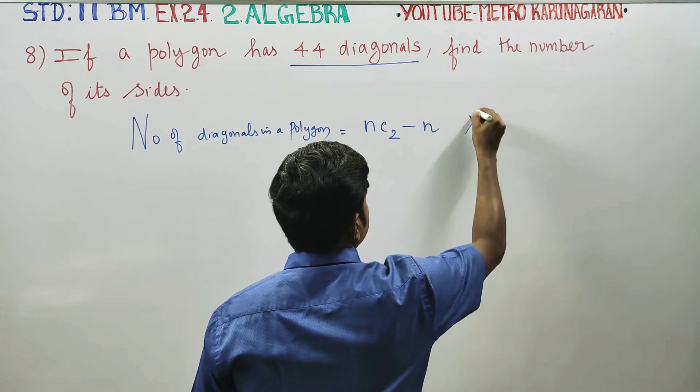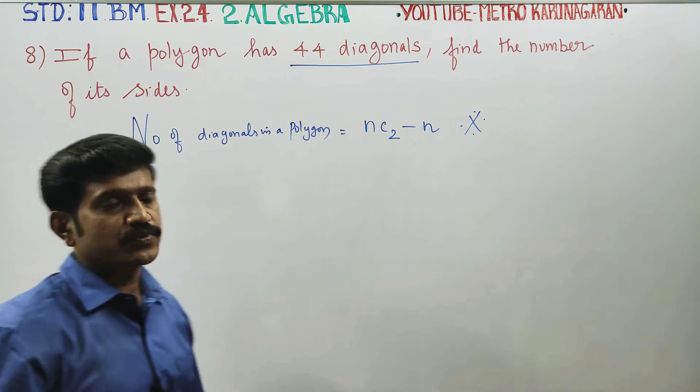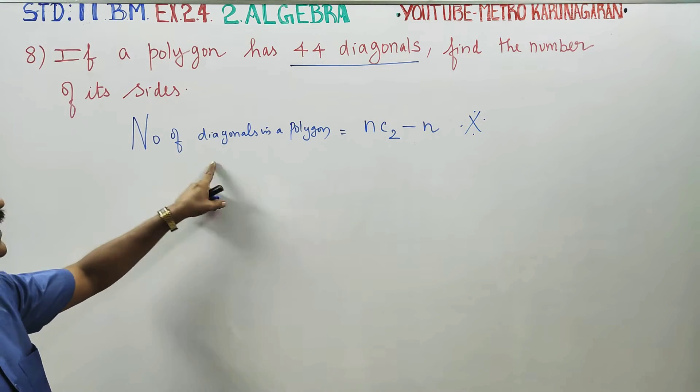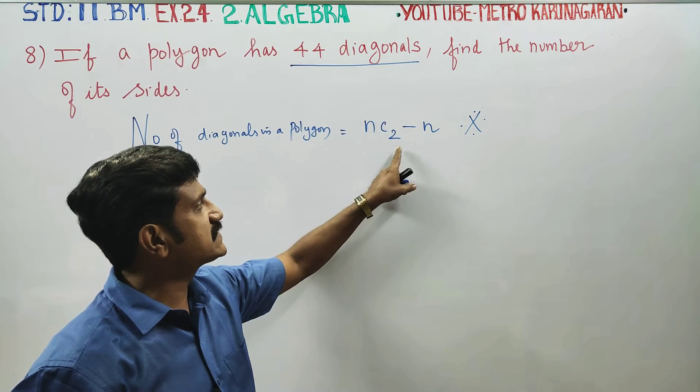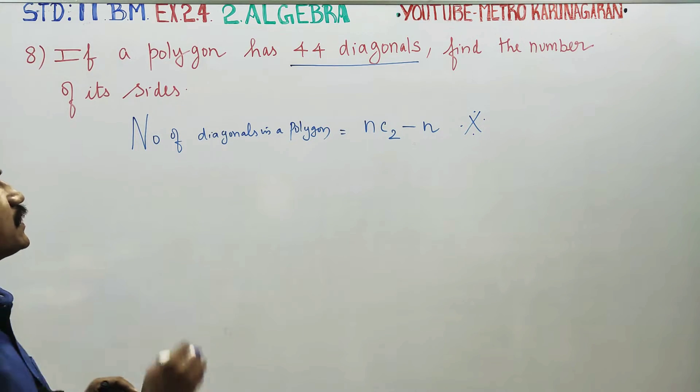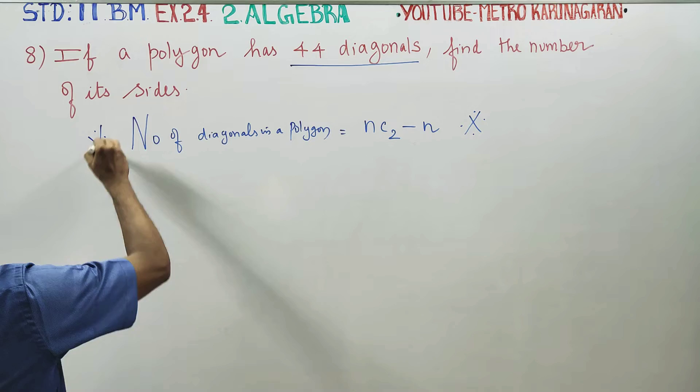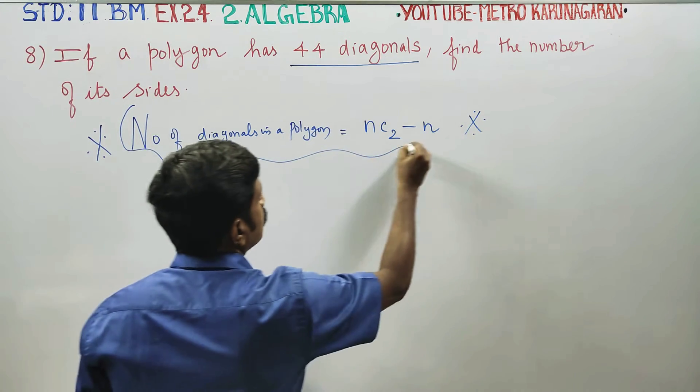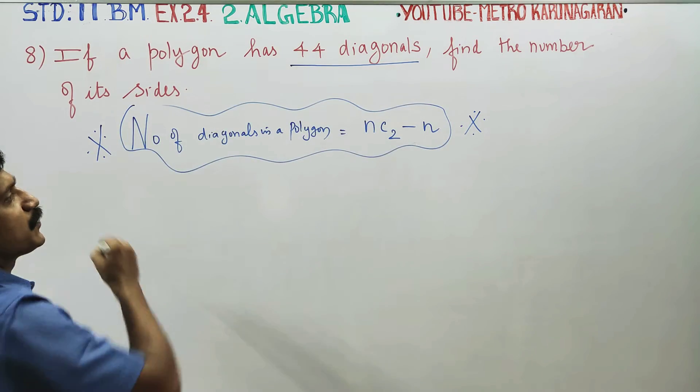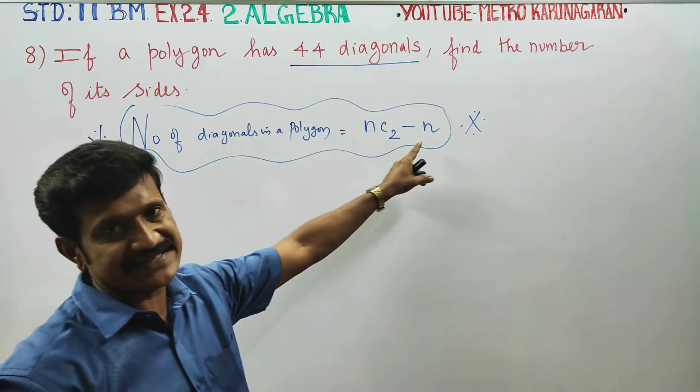Recall the formula: number of diagonals in a polygon is nC2 minus n. This formula is very easy.